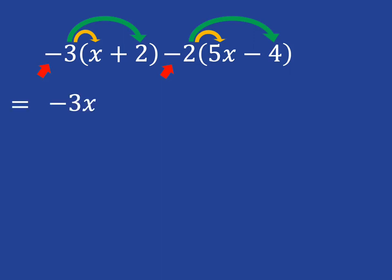Minus 3 times x is minus 3x. Minus 3 times plus 2 is minus 6. Minus 2 times 5x is minus 10x. And now this next point is the point where people often forget the minus: minus 2 times minus 4 is plus 8.